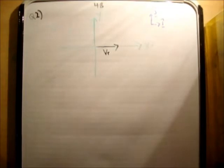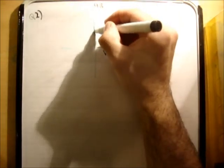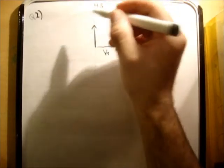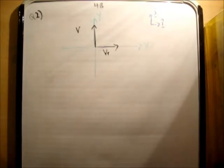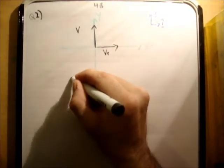And we're told that boat heads straight across at 12 meters per second. So, here is 12 meters per second. I'm going to call that V. And I'm not going to say what it is yet.